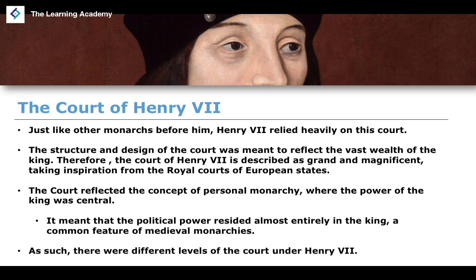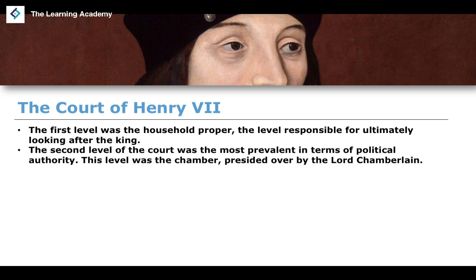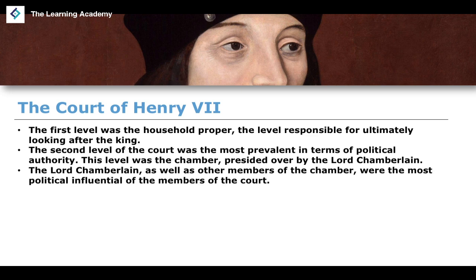There were two main levels of Henry the Seventh's court. The first was the household proper, responsible for looking after the king and all the processes needed to maintain a monarch. The second level, the chamber, presided over by the lord chamberlain, held the most political and legal authority. The lord chamberlain and other members of the chamber were the most politically influential members of the court — effectively the king's inner circle.